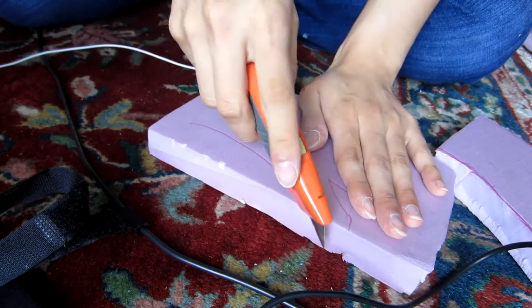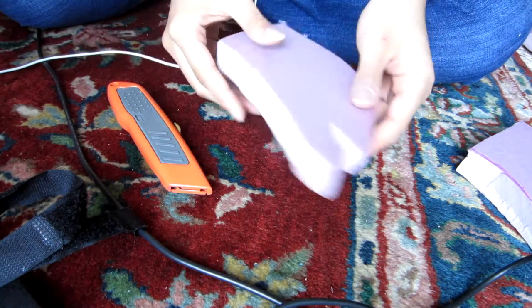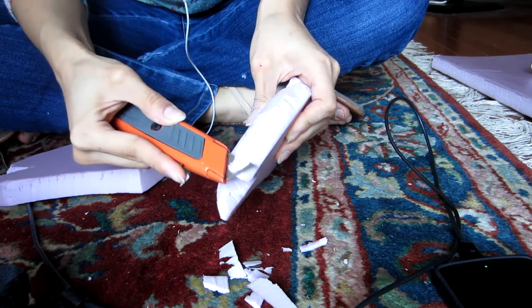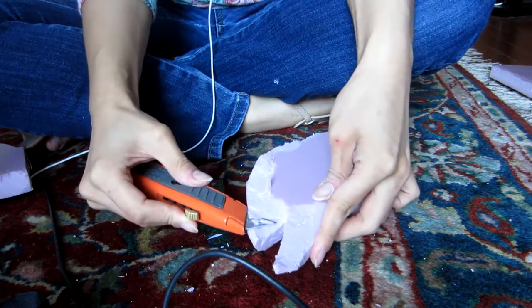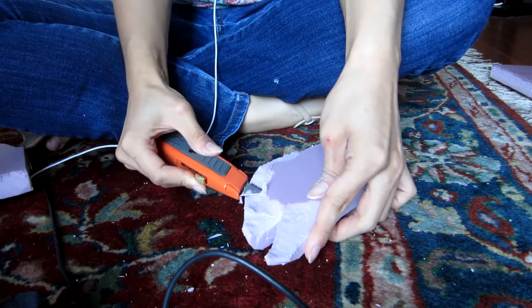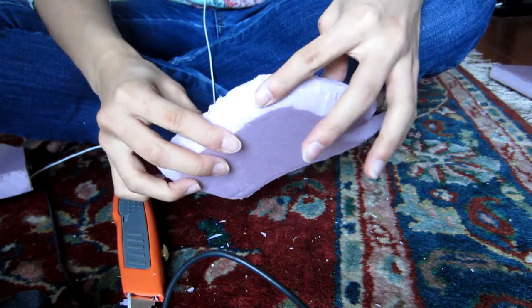So we're going to first cut the pieces out in the specific shapes that we've drawn, and then we're going to go ahead and start carving. We're going to carve it in a curved space so that we can actually fit it to our cheeks comfortably, starting from the ends near your ears and working your way down towards the chin.